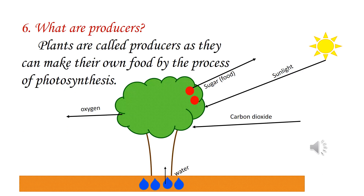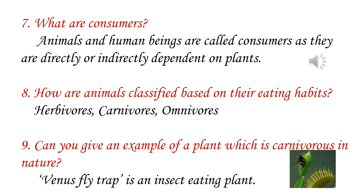What are producers? Plants are called producers as they can make their own food by the process of photosynthesis. What are consumers? Animals and human beings are called consumers as they are directly or indirectly dependent on plants.